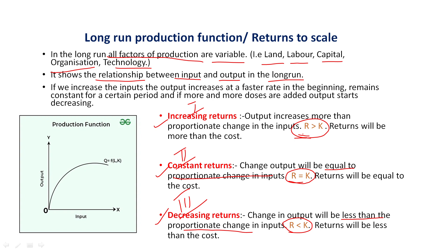This is how the long-run production function is analyzed, which is represented in the graph — input on the x-axis and output on the y-axis. The production function q = f(L, K) gives rise to the desired results in the long-run period. With this, I will end the session. Thank you.